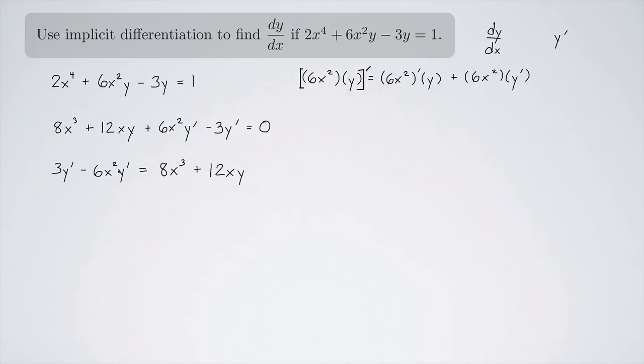Now that I have my y primes on one side of the equation, I can factor that out. So it's going to leave behind a 3 minus 6x^2 equals 8x^3 plus 12xy.